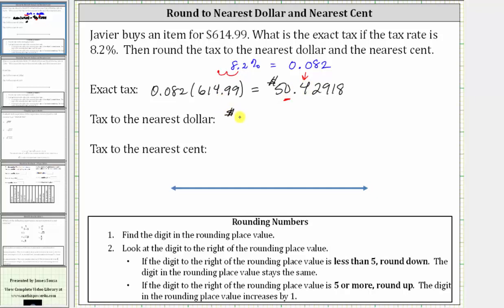Notice when rounding down, the digit in the rounding place value does not change. If we look at this on the number line, again, the exact tax is between $50 and $51. Right in the middle, we would have $50.50. We'll notice how the exact tax is less than $50.50. Let's say approximately here.